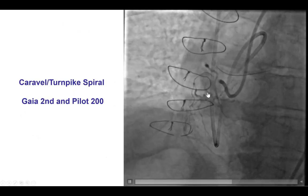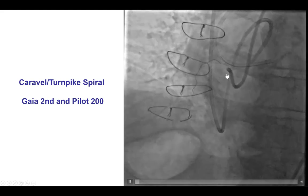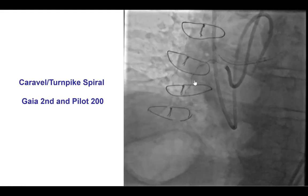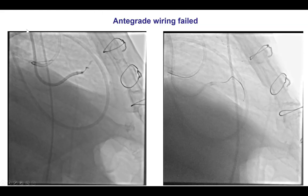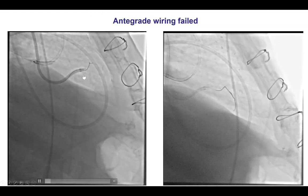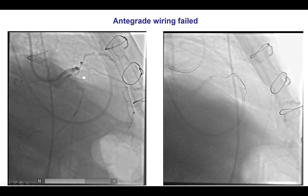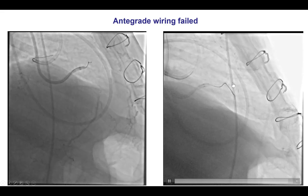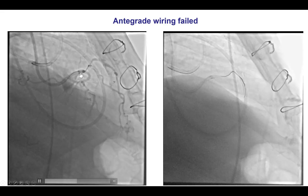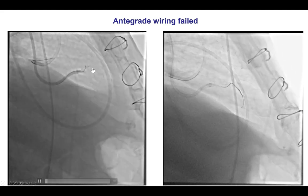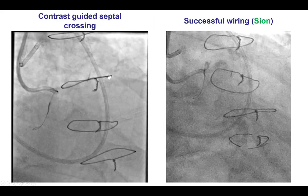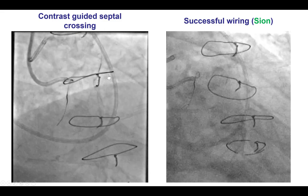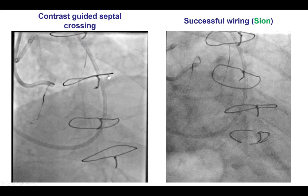In this particular case, we did multiple injections in different projections using a Caravel and Turnpike Spiral microcatheter and various guidewires. The lateral view can sometimes be extremely useful for right coronary artery lesions. However, in this case it did not really open up the proximal cap — it was still confusing whether the vessel was entering this branch or a different location. So given the difficulties with antegrade crossing, we decided to attempt the retrograde approach.